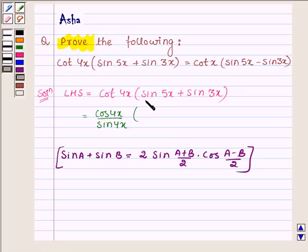So sin 5x plus sin 3x can be written as 2 sin, in place of A we have 5x and in place of B we have 3x, so 8x upon 2 into cos 5x minus 3x, that is 2x upon 2.